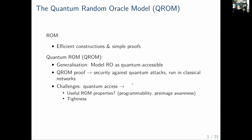The proof in the quantum random oracle model allows us to argue security against quantum attacks that are run in classical networks, meaning interacting with honest users that are still classical.